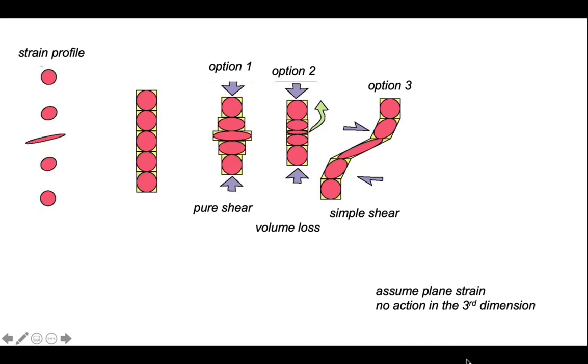Option one is the so-called pure shear model, which shows that the shear zone develops by compression acting perpendicular to the long axis of the ellipses. And the intensity of pure shear increases to the centre of our zone as reflected by the ellipticity of our strain ellipses.